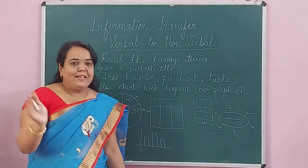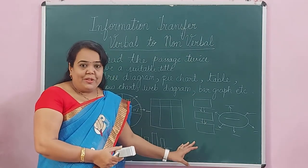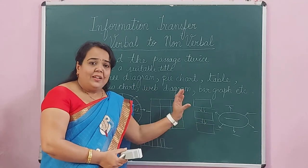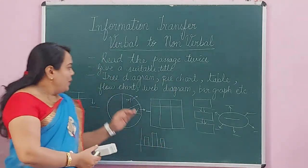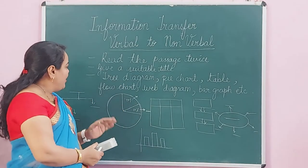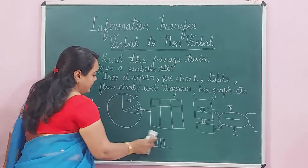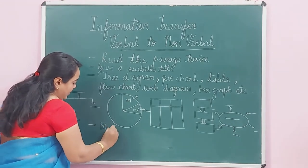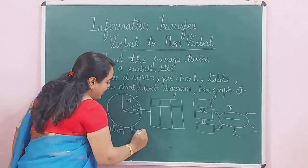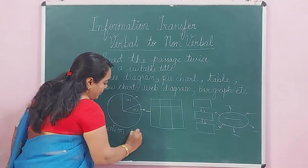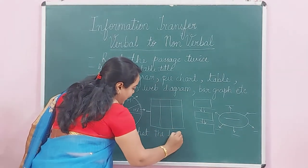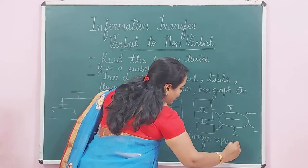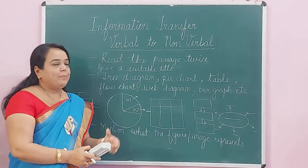In a do's and don'ts table, you are asked to use imperative sentences. In a flow chart, information has to be given step-by-step and you are not expected to write in detail — only keywords or short phrases of two to three words. After you have drawn the suitable diagram, you should write at least two to three sentences about it, mentioning the name of the diagram and what the figure or image represents.